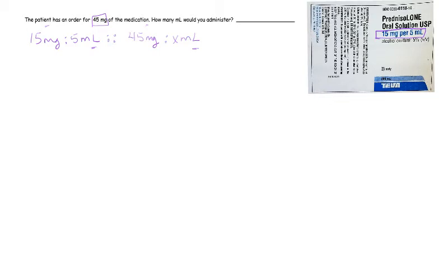The next step is to multiply the means and the extremes, or innies and outies. So we have 15 times x is equal to 45 times 5.